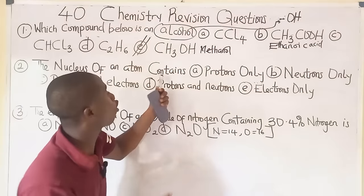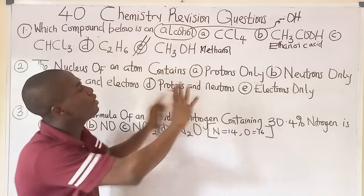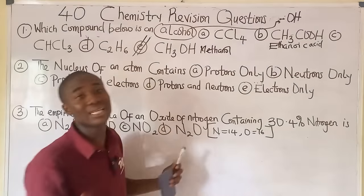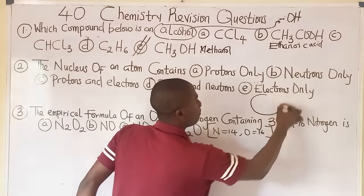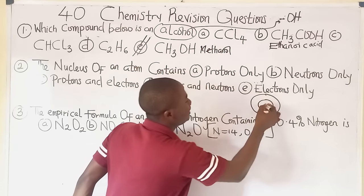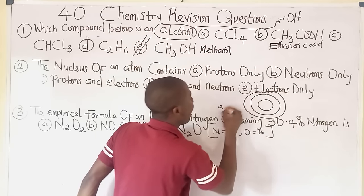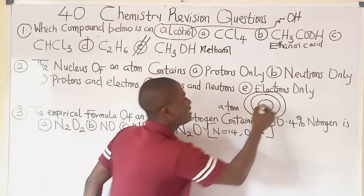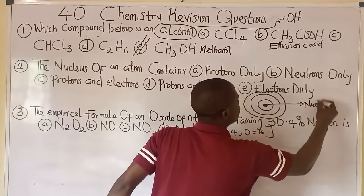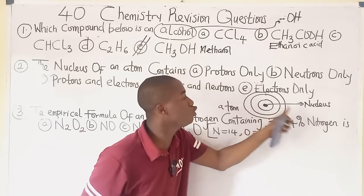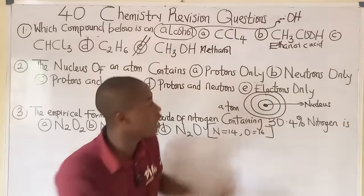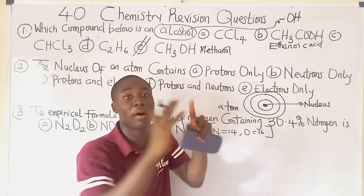Before reading the options, let me explain something important. Let's say this is an atom — an atom is made up of a centrally located nucleus, called the atomic nucleus. This is called atomic nucleus because we are discussing atoms; in biology it would be called the cell nucleus, but in chemistry we are dealing with atoms.